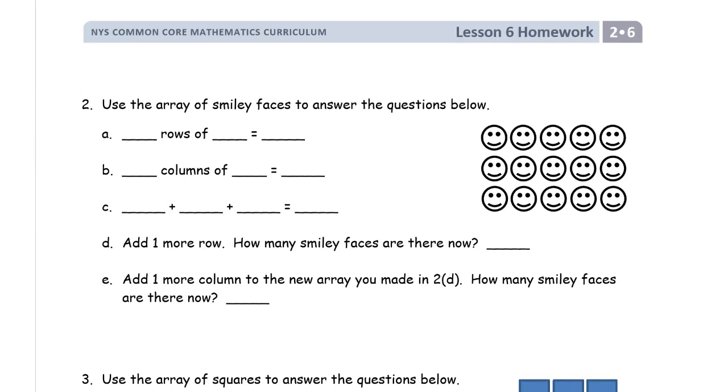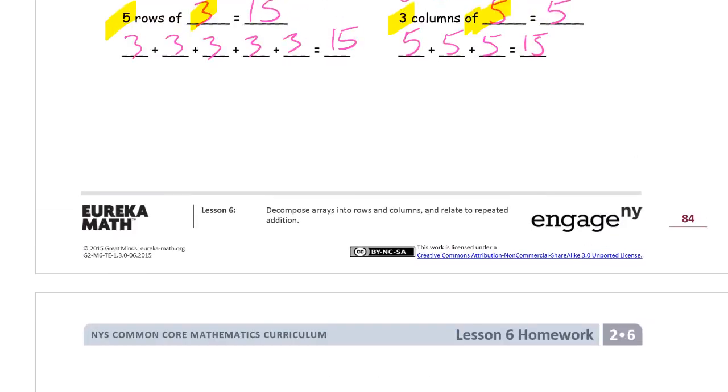Use the array of smiley faces to answer the questions below. So, this is a question about rows. Just circle a row and look at it. How many rows are there? Well, there's three rows. Of how many in each row? There's three rows of five. That's 15. We know that from the first page. Right?